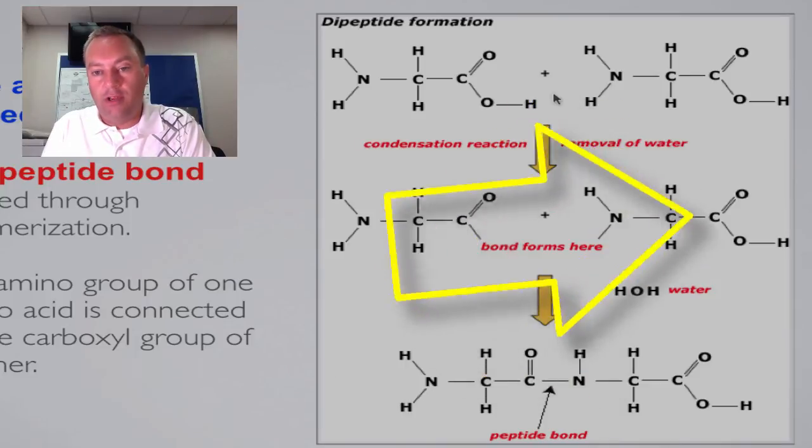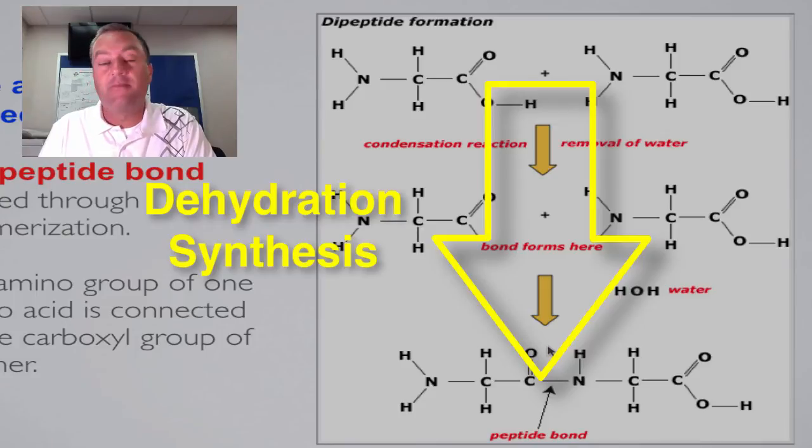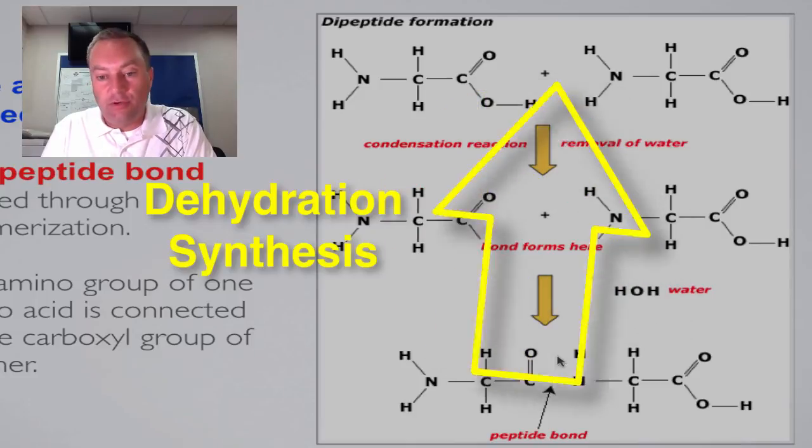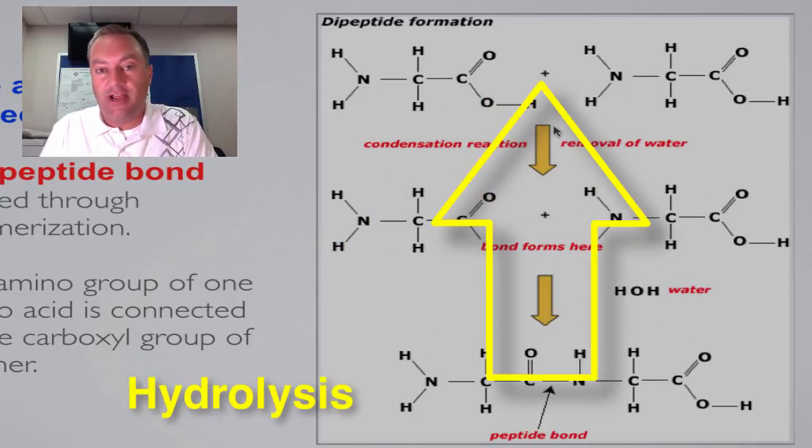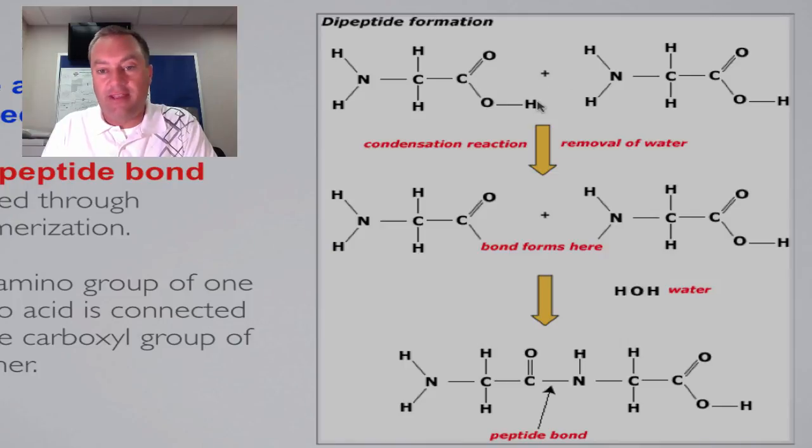Now remember, when we're going in this direction - in other words, dehydration synthesis - this is an anabolic process. We have built something. So we took two monomers, made a dimer, and this peptide bond represents stored energy. If we do the reverse, which is hydrolysis, this bond will be broken, energy will be released, the water will be replaced, and we've done the catabolic reaction because we took something and broke it into different pieces.